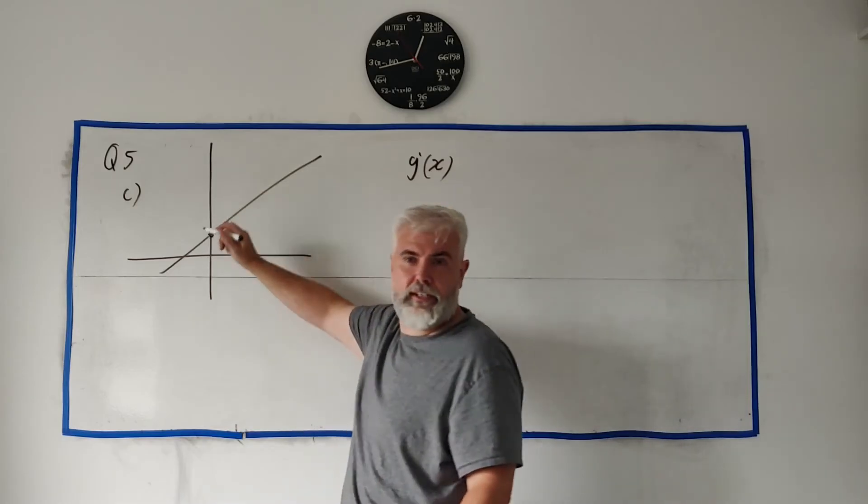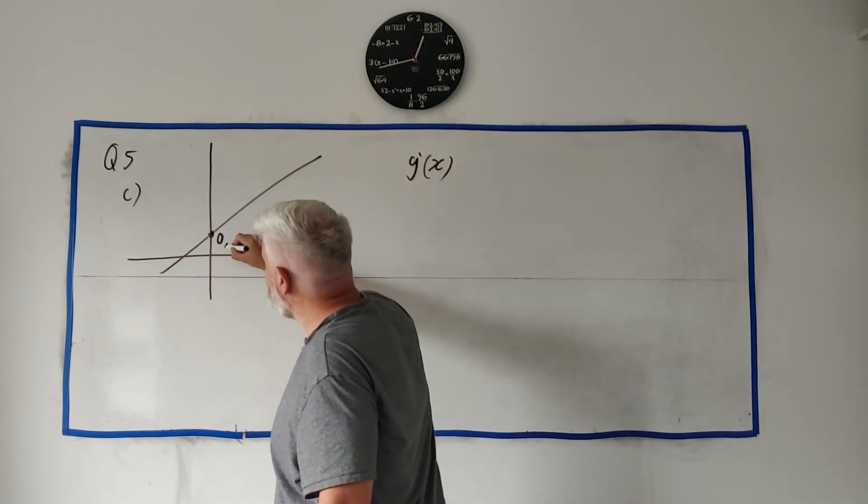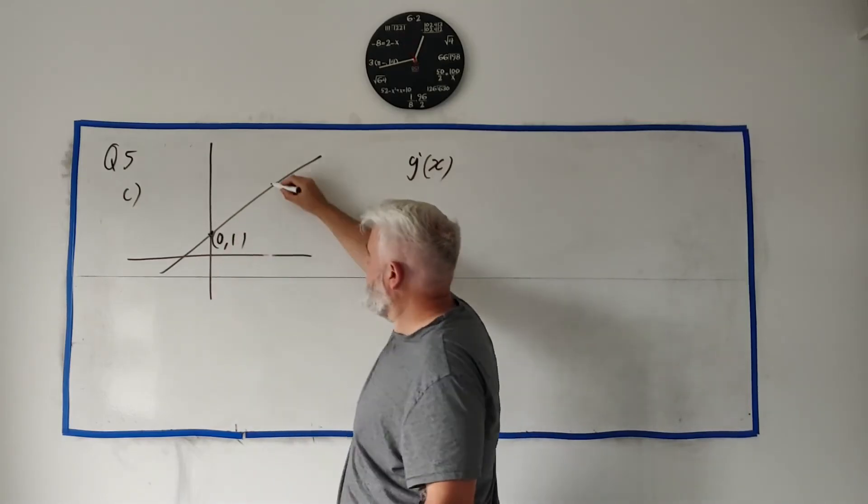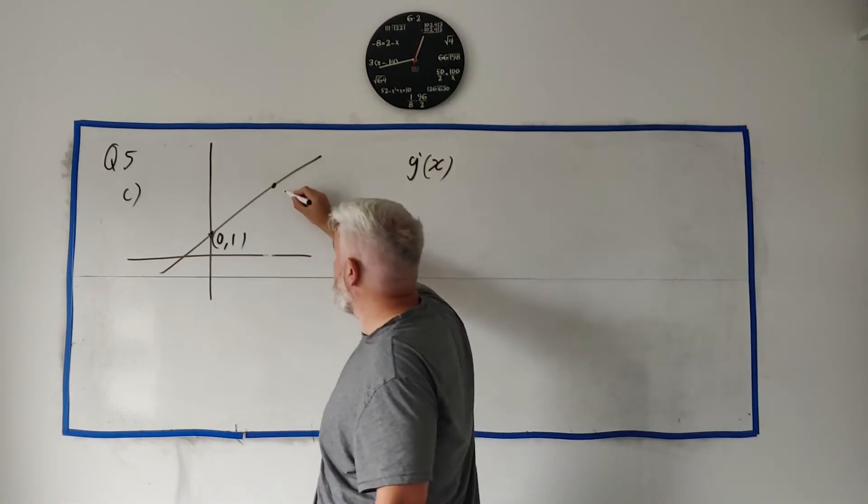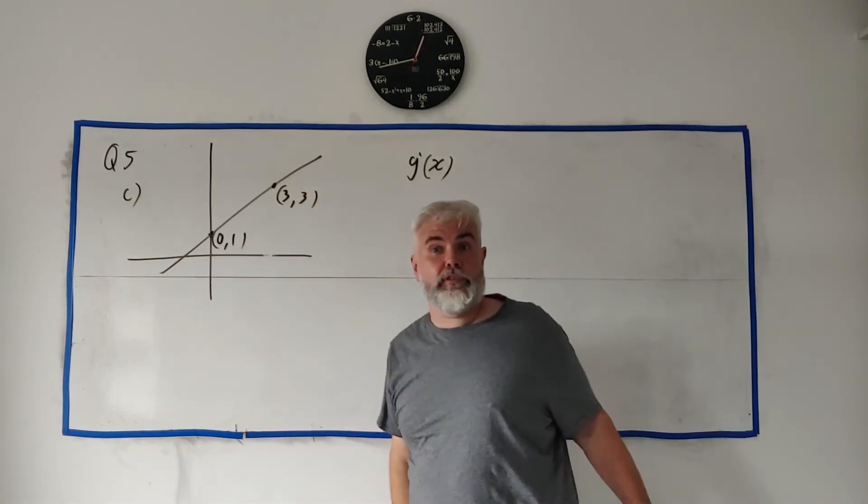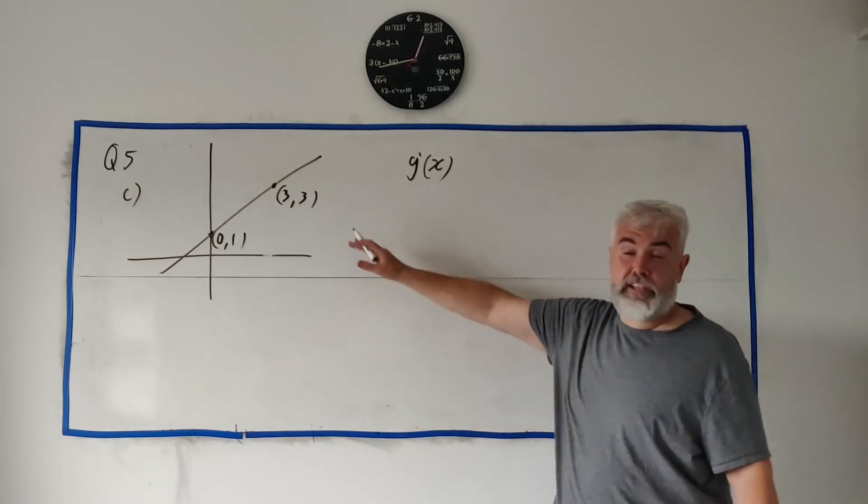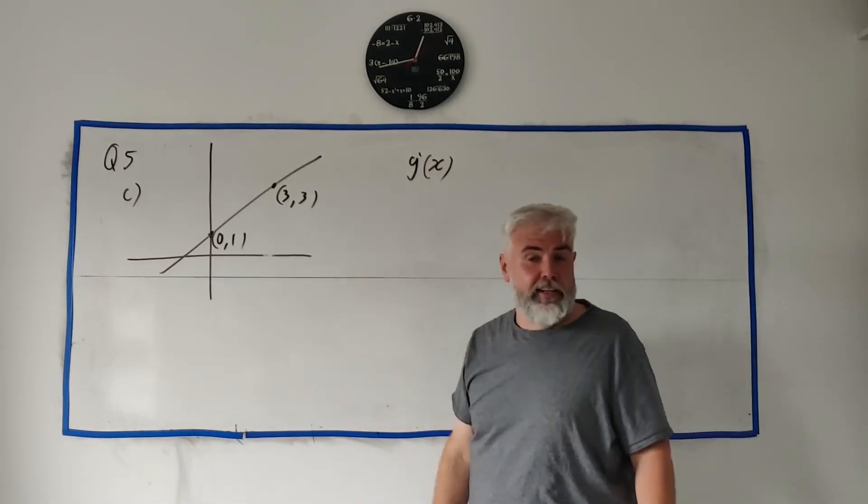This one here is (0,1) and I think the other one that lines up is (3,3). There's two points on the equation, you can use the slope formula, find the answer there, you'll get the full marks. That's a perfectly okay way to do it.